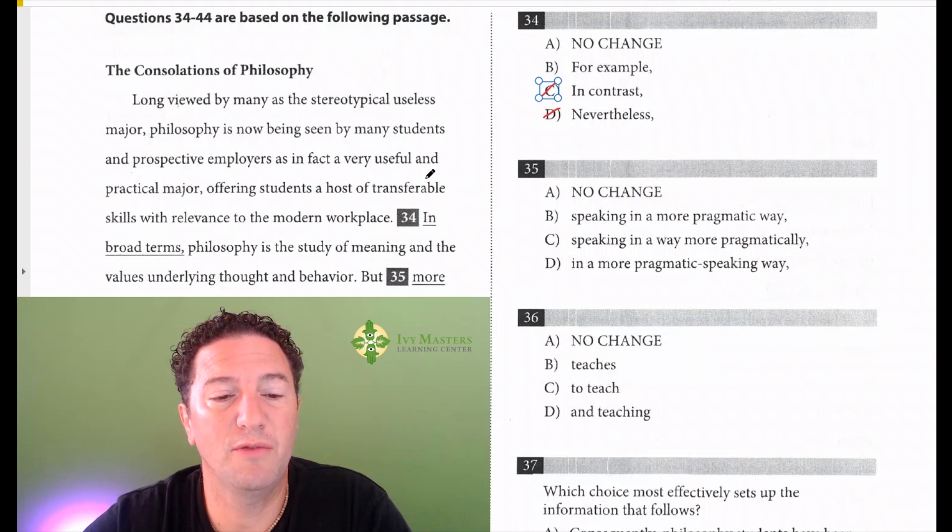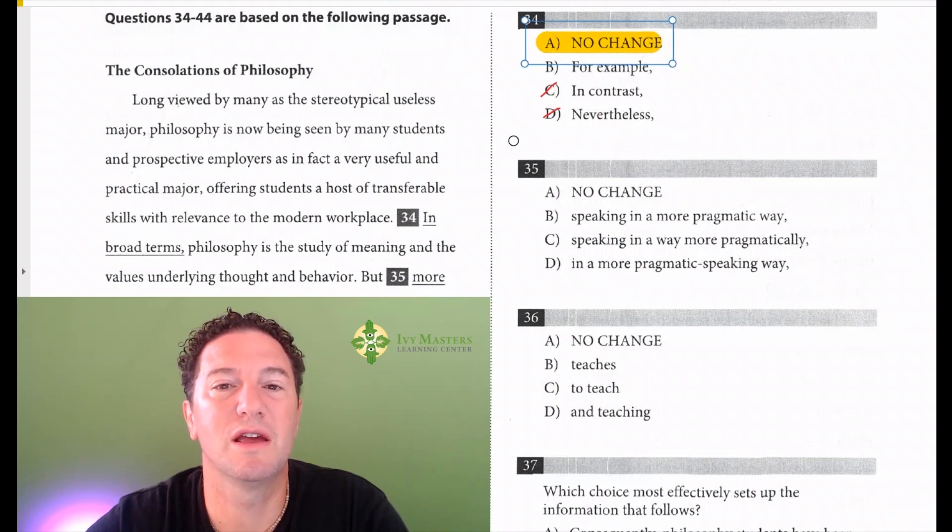So we're left with those two. And then we'd have to say, is what comes after an example of what comes before? Or is what comes after, when it says in broad terms, it sounds like it may be defining it for you in broad terms. And what do we get? Philosophy is the study of meaning and values underlining thought and behavior. It sounds like a definition. So the correct answer is A in broad terms. No change.